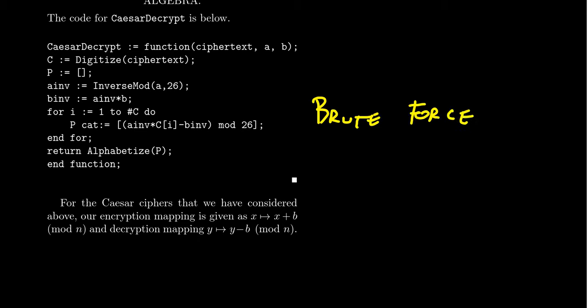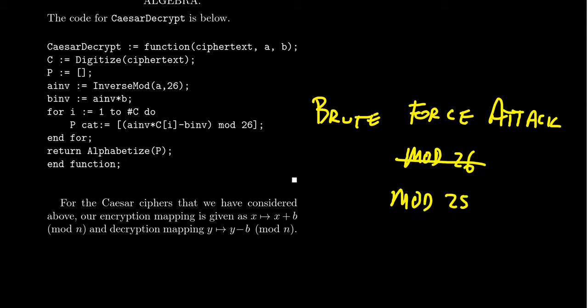This is what's called a brute force attack — looking at every possibility to see which one works. A brute force attack is not effective if you have a good crypto system with too many possibilities. Working mod 26 is far too small; even mod 255 or 256 would still be trivial for a computer. So although the Caesar cipher worked well in ancient Rome, in the modern digital age we need a much larger number of possible keys to be secure against brute force attacks.